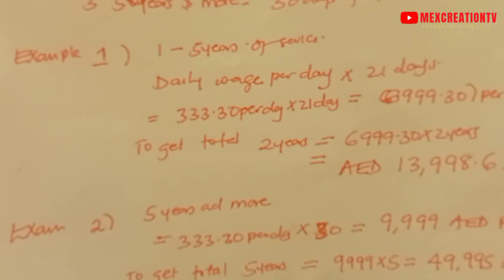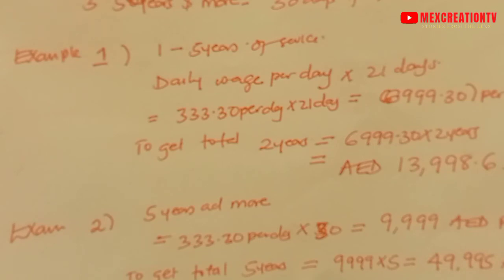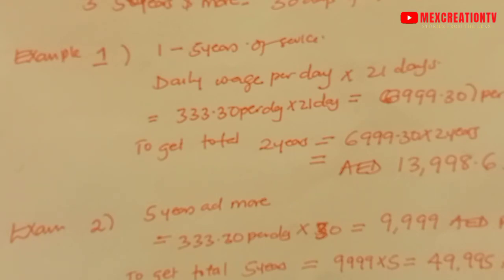Now for a person who is five years and more in the company under the limited contract: you still take the same daily wage, which is 333.30 dirhams per day. But remember, if you are five years and more, you are given 30 days. So 333.30 multiplied by 30 days equals 9,999 dirhams per year. That means the company has to pay you 9,999 dirhams each year.